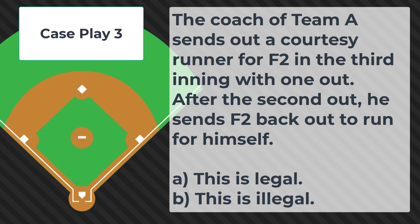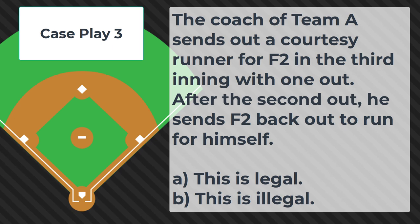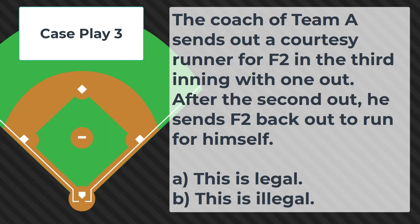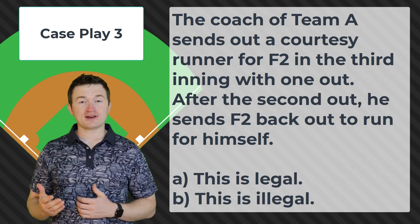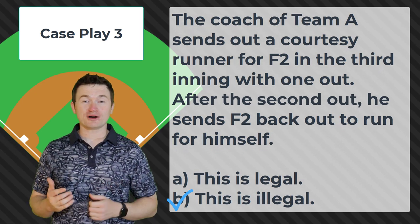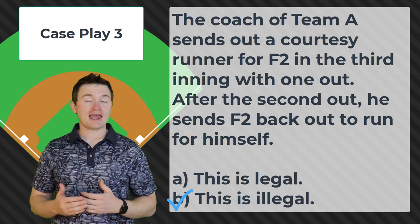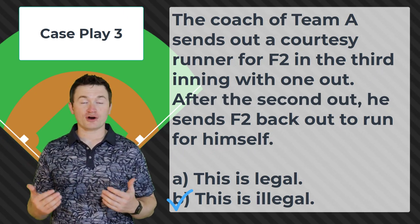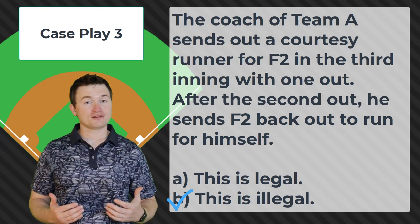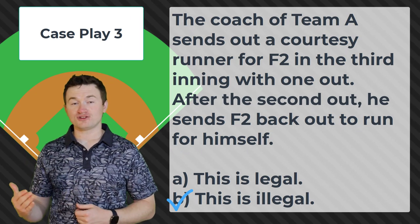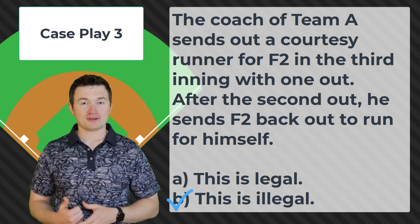Case play number three: the coach of team A sends out a courtesy runner for F2 in the third inning with one out. After the second out he sends F2 back out to run for himself. Is this legal or illegal? The correct answer is illegal. Once the courtesy runner is put out there, they can't have the catcher or pitcher come back in to finish running the bases. They could use another courtesy runner or make a substitution, but the original player cannot go back out.